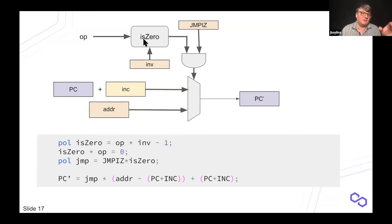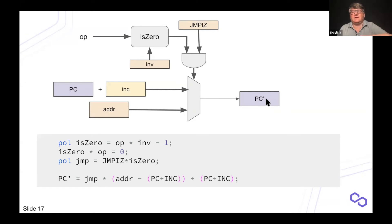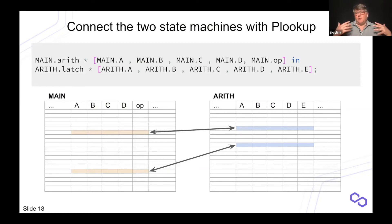We can also do conditional jumps. We have a circuit that determines if the operator is zero or not. If it's zero and the instruction is a jump, instead of loading the program counter to program counter plus one, we load a new address — a conditional jump — just by defining which condition the next program counter must satisfy. We also want to do arithmetic operations — multiplications, additions, and so on.